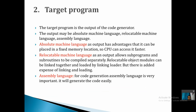The next issue is the target program, which is the output of the code generator. The output can be in any one of three forms: absolute machine language, relocatable machine language, or assembly language. If the output is in absolute machine language, the program is placed in a fixed location in memory, making it easy for the CPU to access it faster.